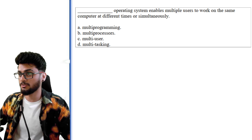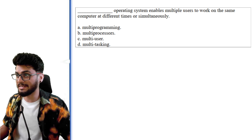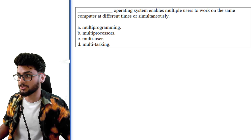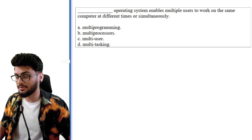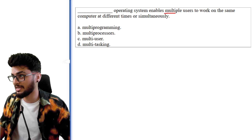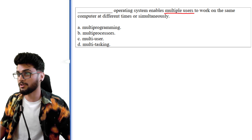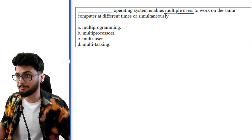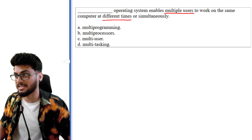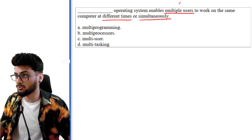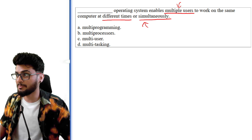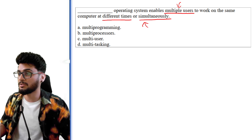So let's begin with the first question. 'Dash operating system enables multiple users.' Always underline the most important aspects of a question. So the key phrase is 'multiple users' — important — to work on the same computer at different times or simultaneously.